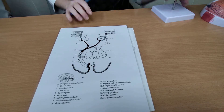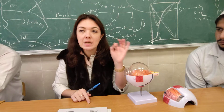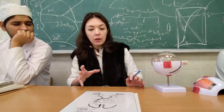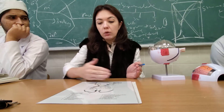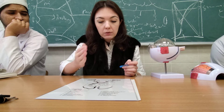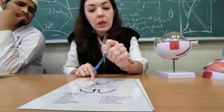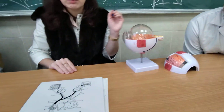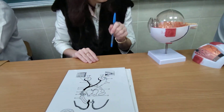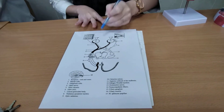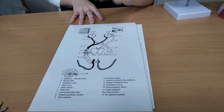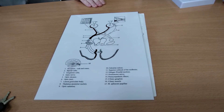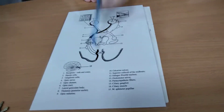Let's talk about the optic analyzer. The eyeball works as the receptor part of the optic analyzer. An analyzer is a set of structures that includes the peripheral (receptor) part, the conducting tract, and the cortical center. For the optic analyzer, the peripheral part is located in the eyeball — specifically in the retina, in the rods and cones. The conducting tract is what you will all draw for the next lesson. The cortical center of vision is located in the cortex around the calcarine sulcus.